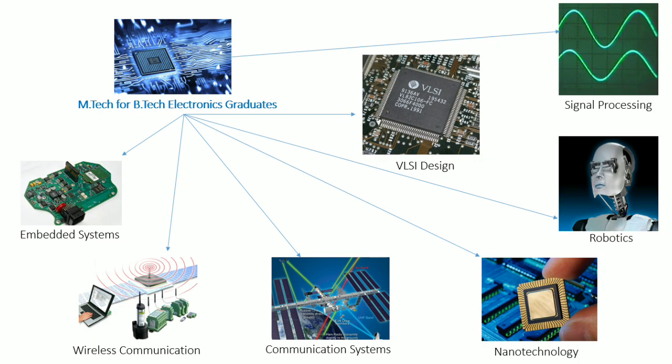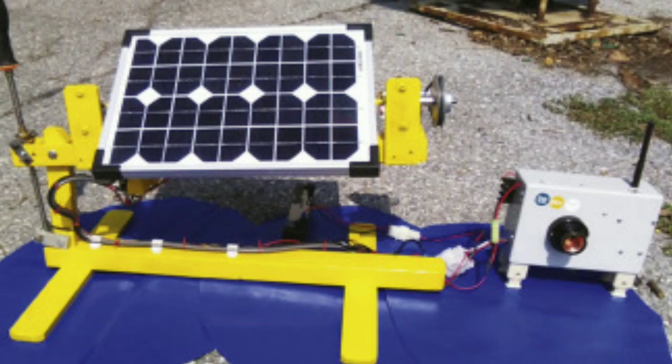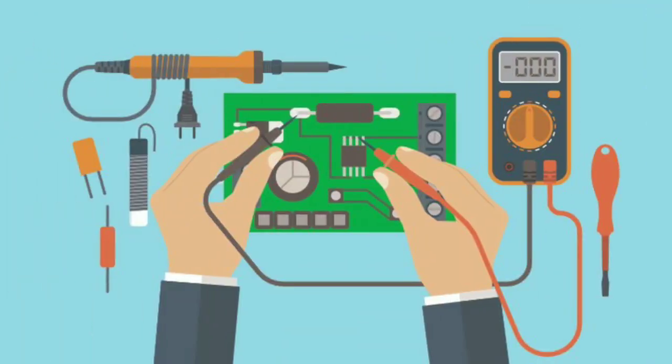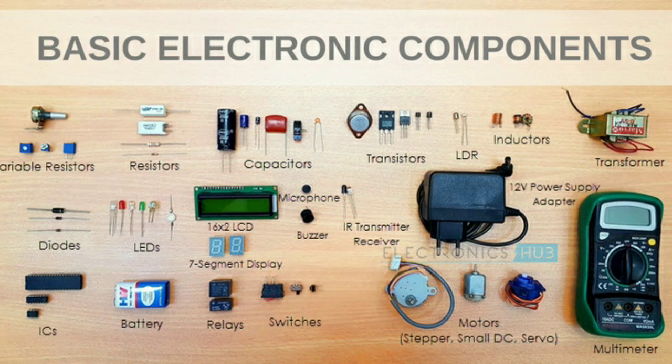Electronics engineers work together at the forefront of practical technology, improving devices and systems we use every day. From solar cells to mobile phones, we innovate to meet society's communication and technology needs. In this electronics engineering course, students learn about basic electronic circuits, different electronic components and devices, and how they are manufactured.